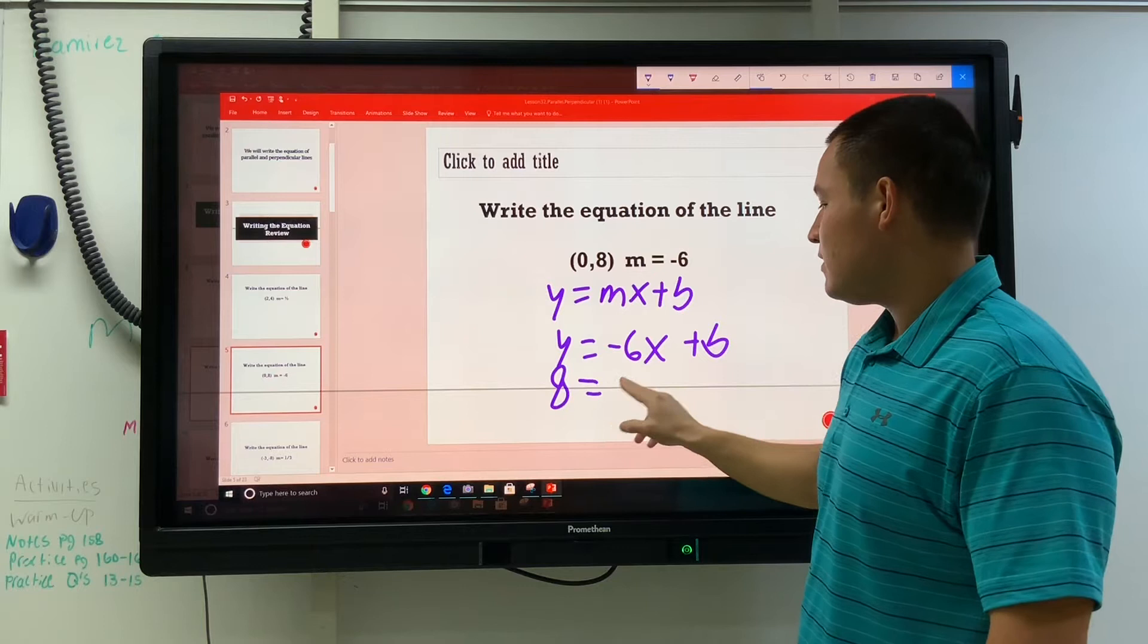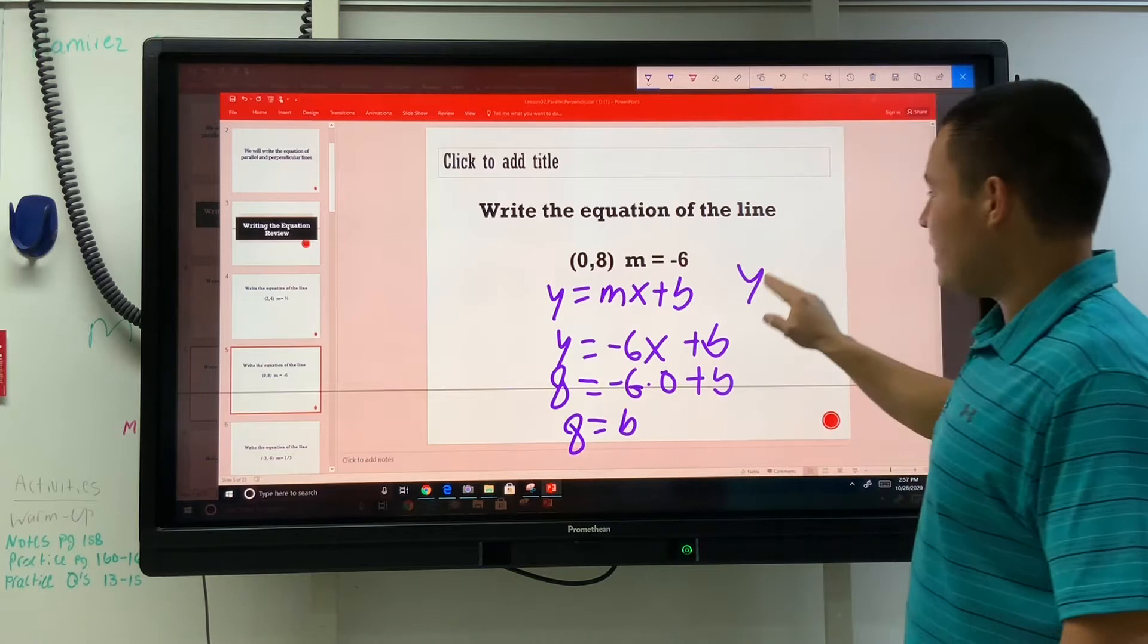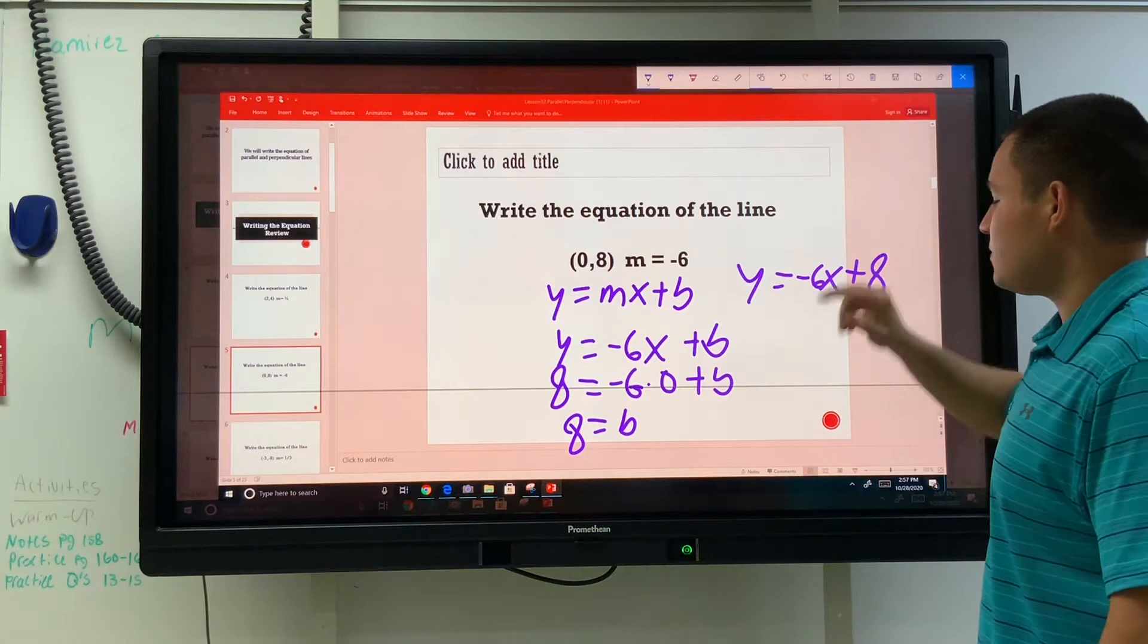8 is y, negative 6 is multiplying 0, plus b. 6 times 0 is 0, so we have b is equal to 8, which means the actual equation is y is equal to negative 6x plus 8.